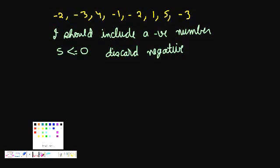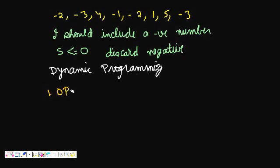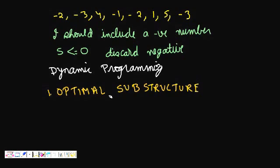We will use dynamic programming to solve this problem — the sledgehammer of programming. It is a very powerful technique. What it needs first is optimal substructure, which means the solution of smaller subproblems, when combined, gives us the optimal solution. The optimal solutions of subproblems, when combined, should give the optimal solution of the larger problem.